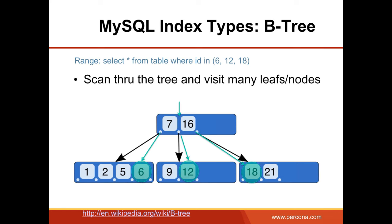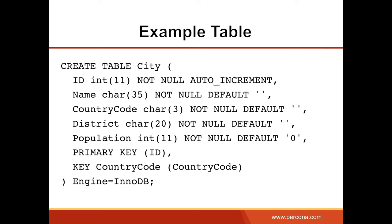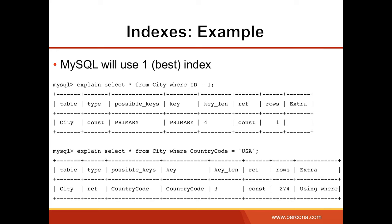Let me show you the example table I will use throughout the slides to demonstrate slow queries and how we can optimize them. This table is called city, part of the MySQL example database you can download from dev.mysql.com. The table has a primary key and also a secondary key, country_code. If you specify ID = 1, MySQL is smart enough to choose the primary key. If you specify country_code, then MySQL will choose the index on country_code.